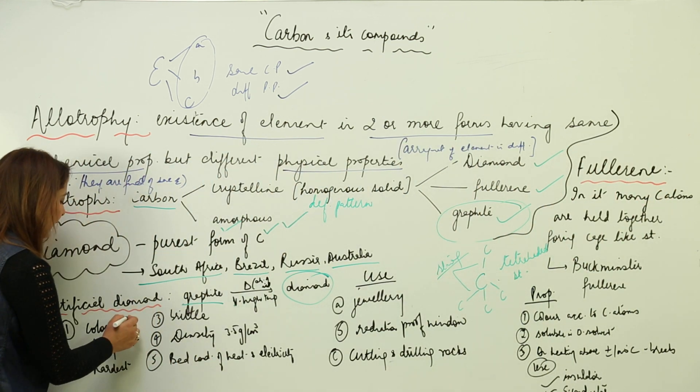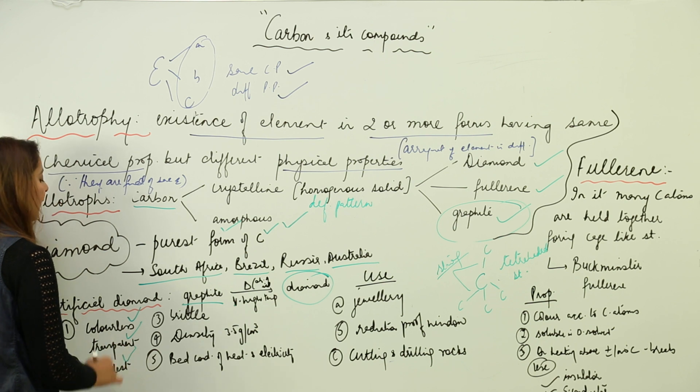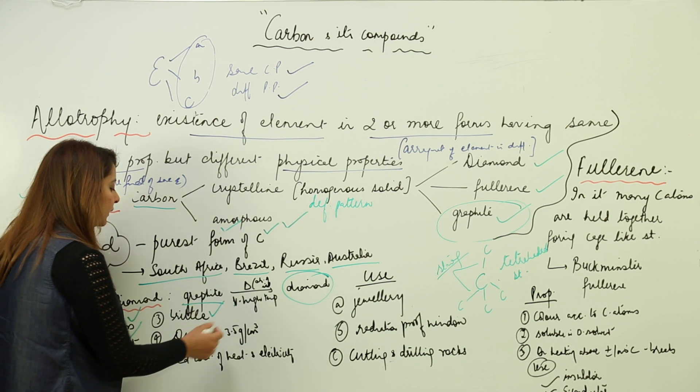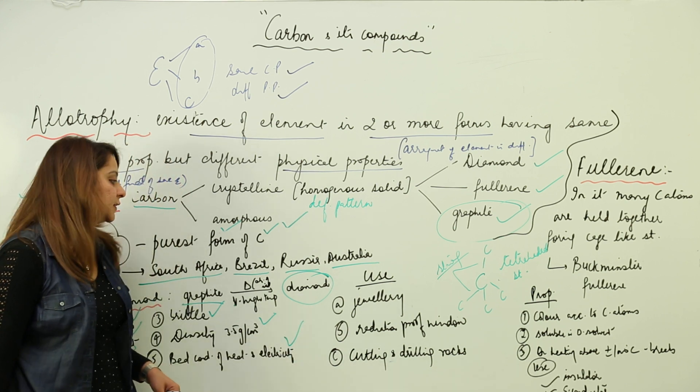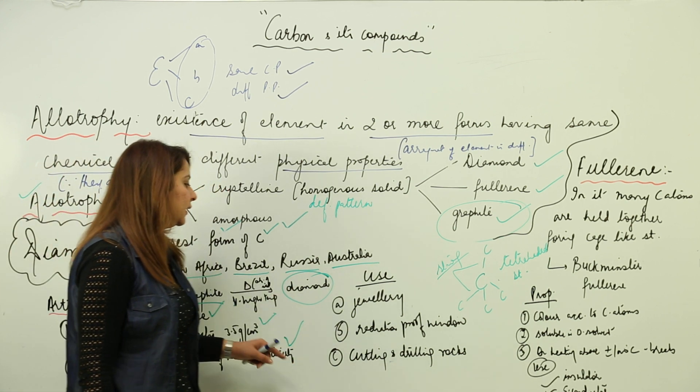Looking onto the properties: it is colorless, transparent, hardest, brittle, density 3.5 grams per centimeter cube, bad conductor of heat and electricity.